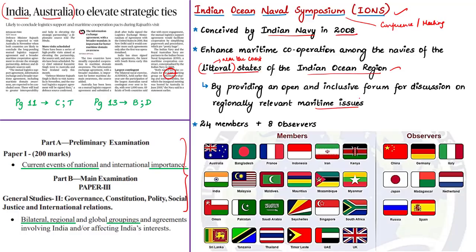There are 24 nations which are members to this Indian Ocean Naval Symposium and 8 observers as you can see in this list. India and Australia both are members of the Indian Ocean Naval Symposium.